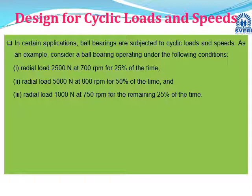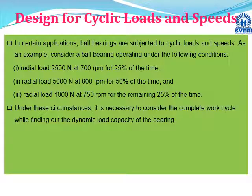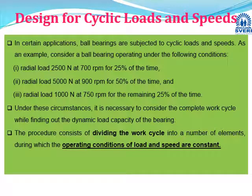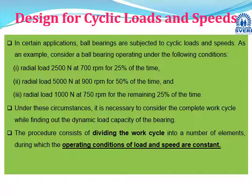The cycle is divided into three parts: 25% of time, 50% of time, and remaining 25% of time. Under these conditions it is required to consider the complete work cycle while finding the dynamic load carrying capacity of the bearing. Divide the work cycle into elements during which operating conditions of load and speed are constant. For the first condition, radial load 2500 N and rpm 700 are constant. Similarly for the second and third conditions, speed and load are constant.